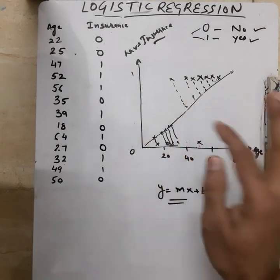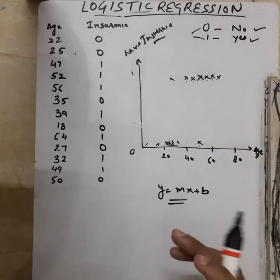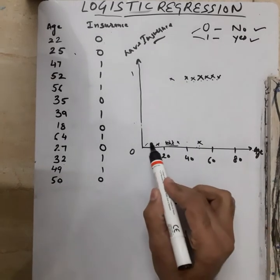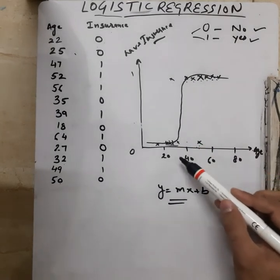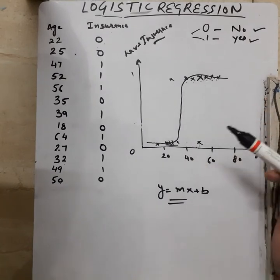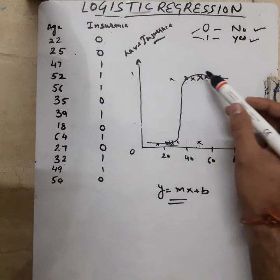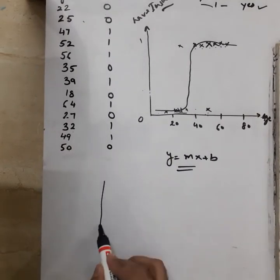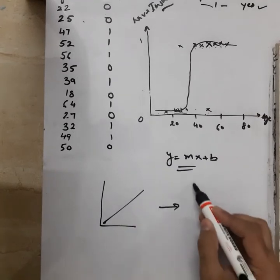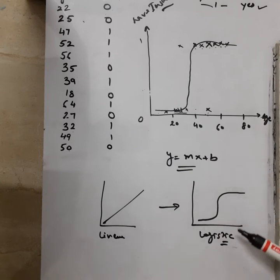So how can we solve this problem? If I take a close look at these data points, if somehow I can draw a line something like an S-curve, this sort of line can cover most of the data points. Obviously there are some outliers which we can ignore. So how can we convert the straight line of linear regression into this S-shaped curve? This is linear regression and this is logistic regression — that's why logistic regression comes to our rescue in such scenarios.